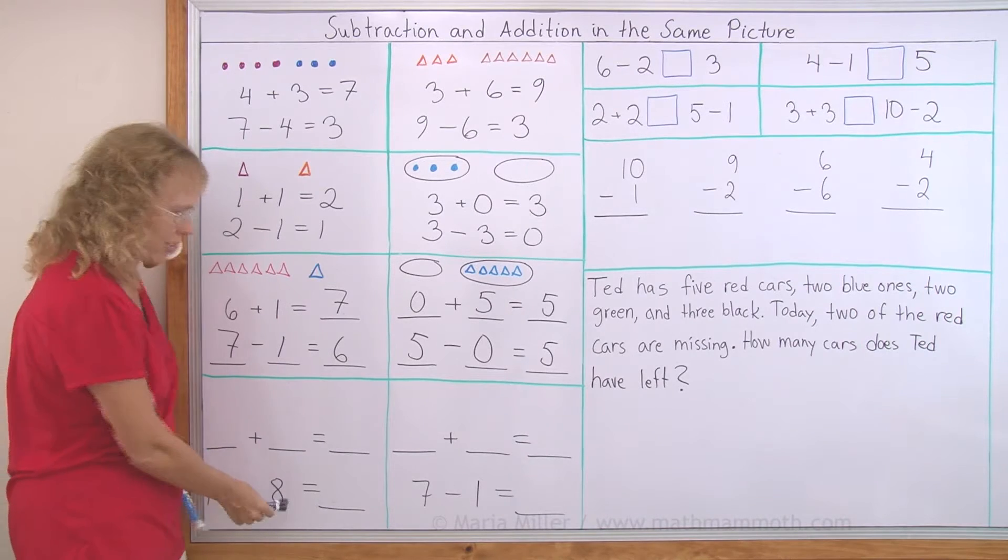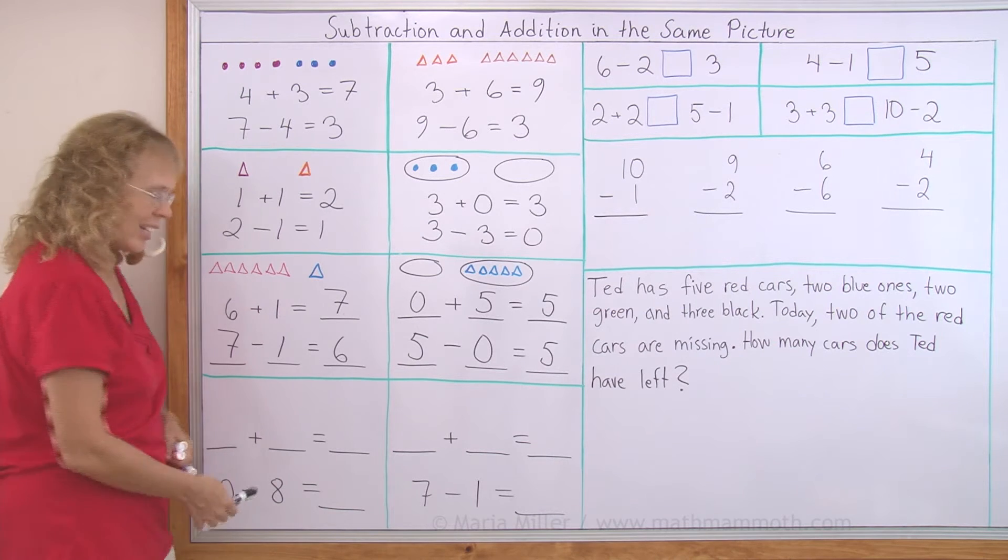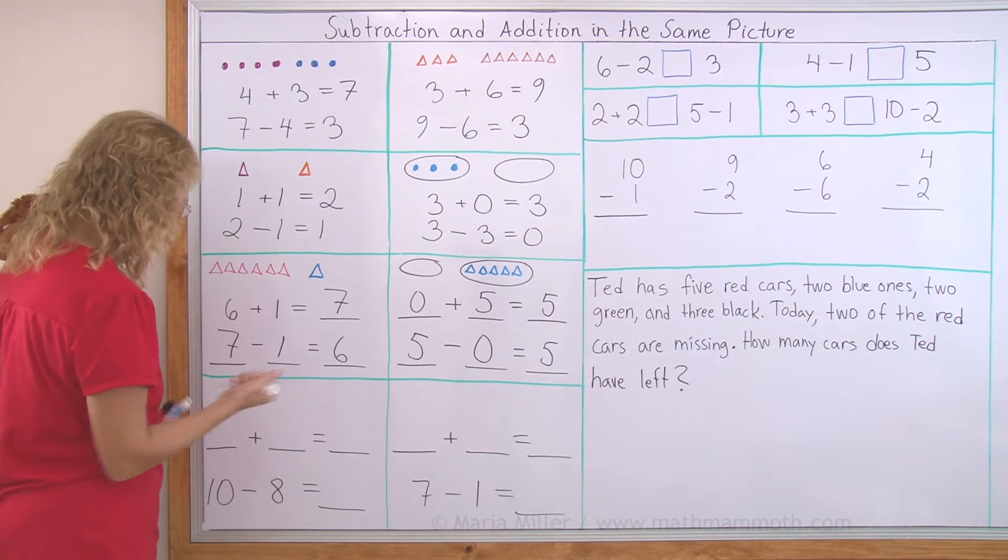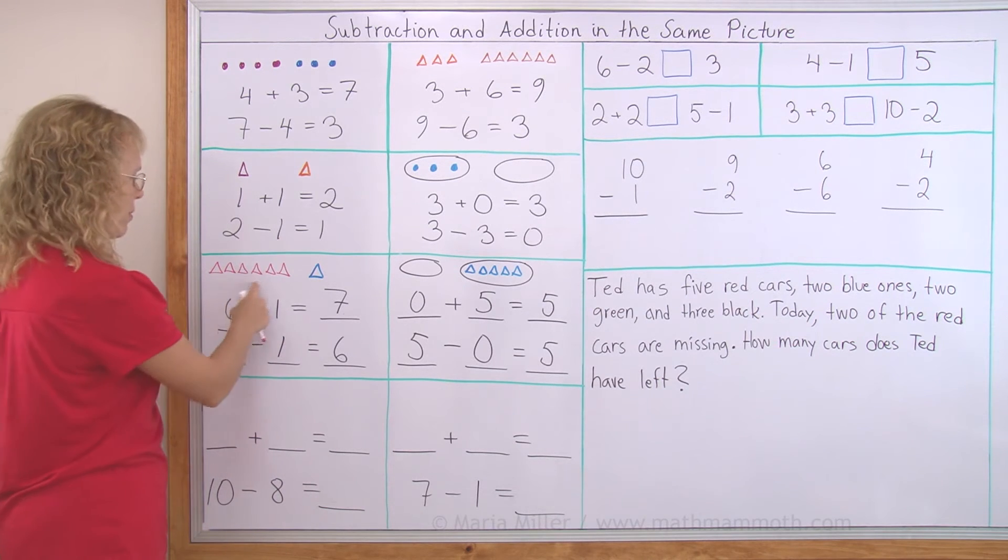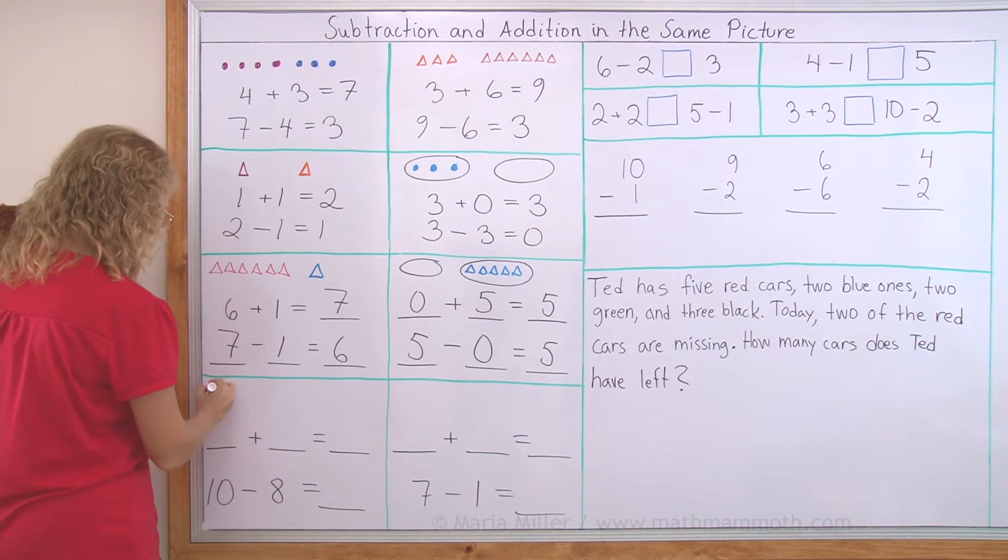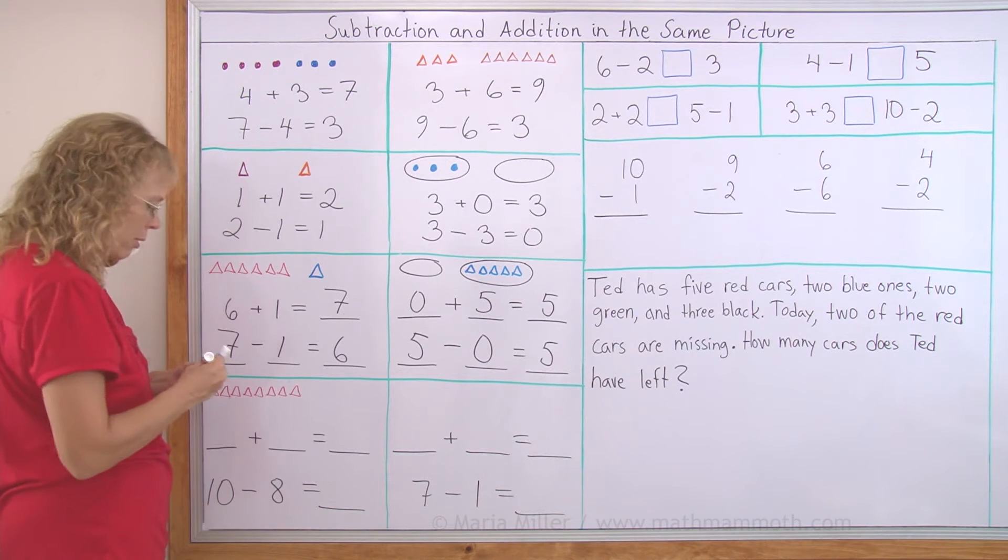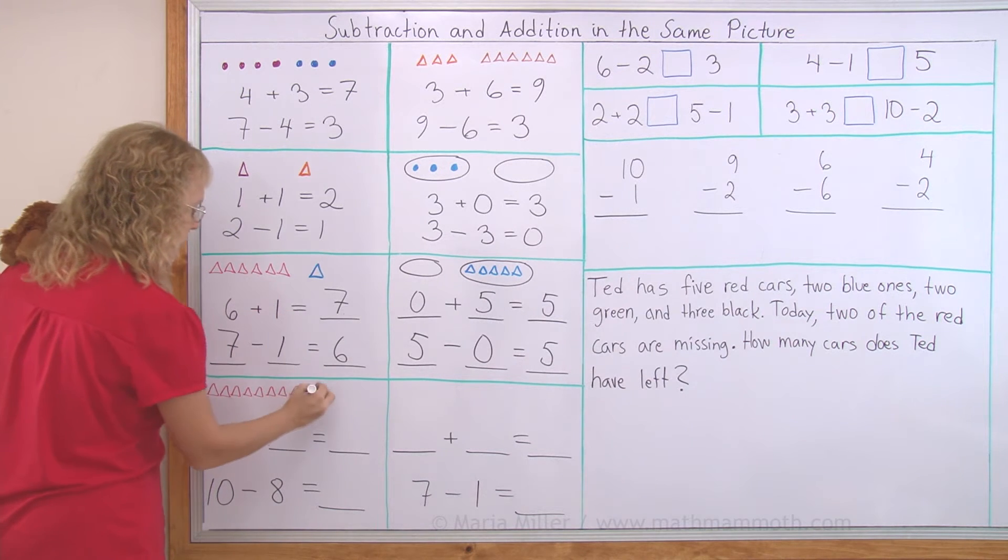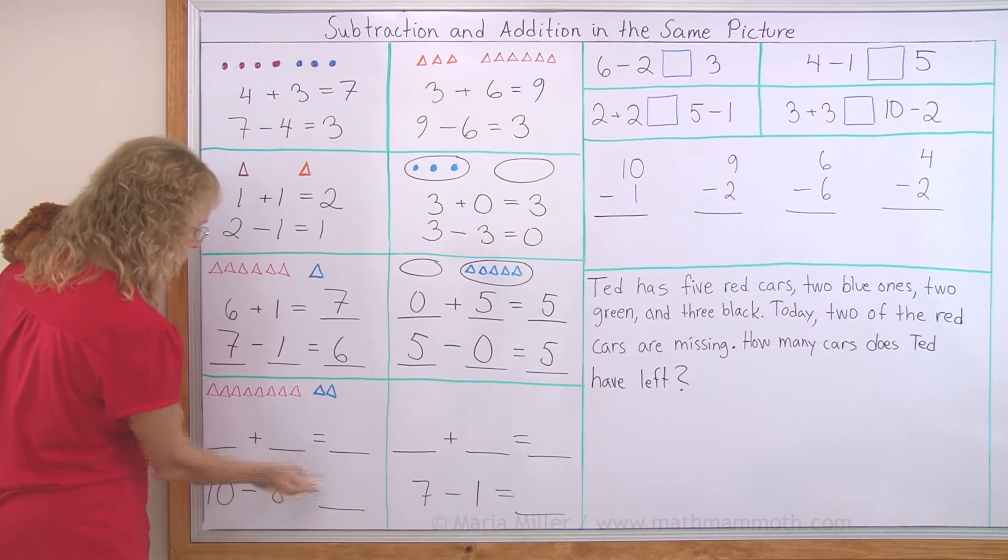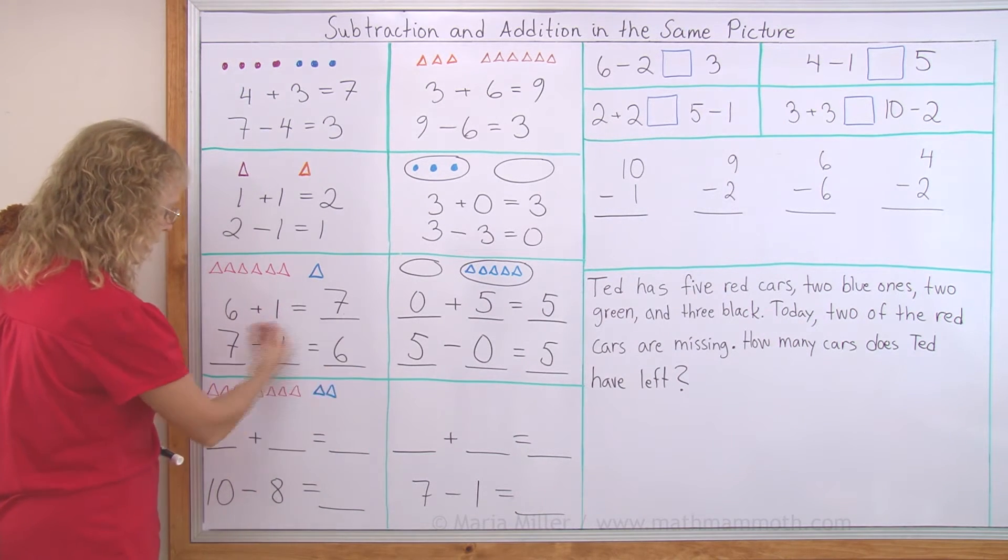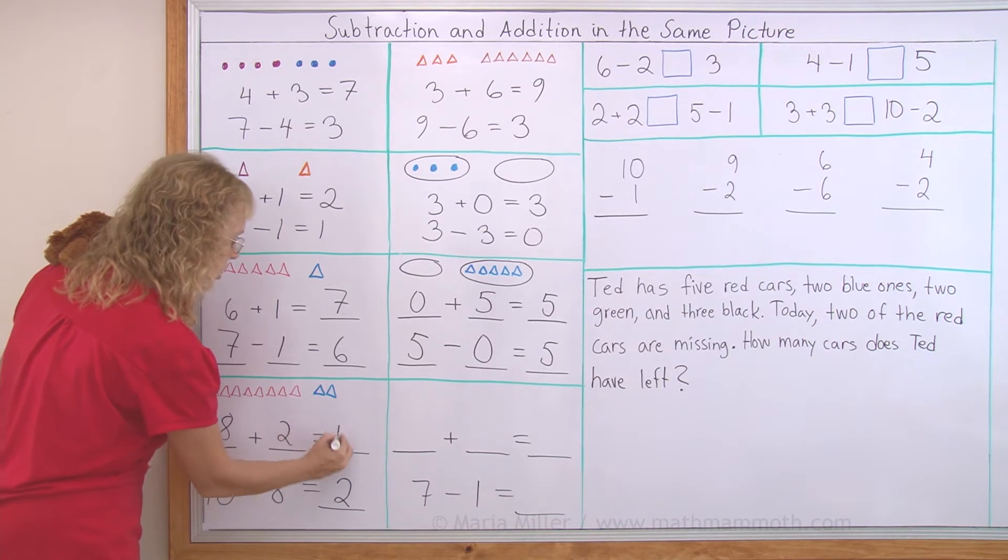Over here we have a subtraction. And then we need to draw the picture. Well ten tells me how many they have in the beginning. So ten in the beginning. But it's going to be in two groups, like here. And if eight are going away, I could draw eight. Those eight will go away. But then there will be two more. So that I have ten in total. Because the subtraction starts with how many there are in the beginning. Ten, take away those eight, leaves two. And the addition would be 8 + 2 = 10.